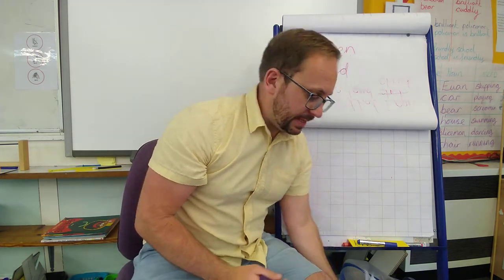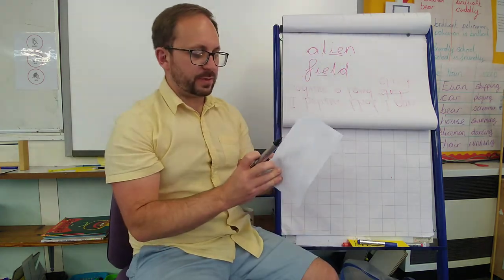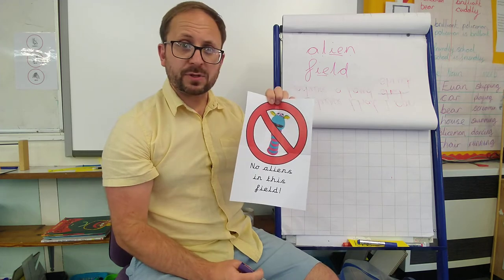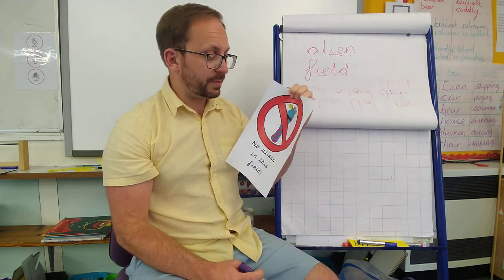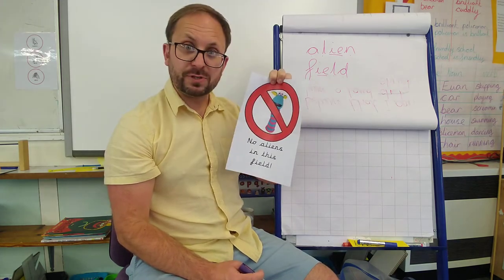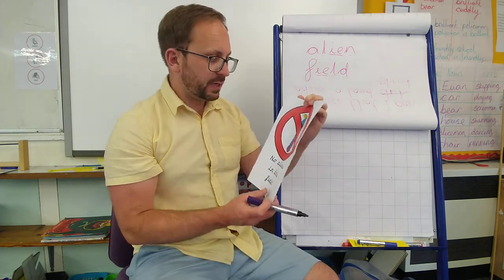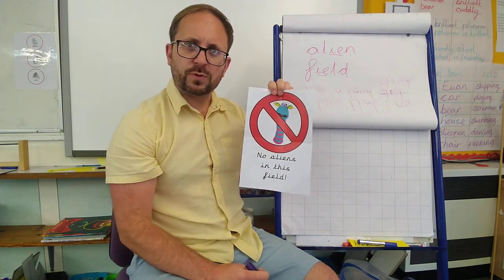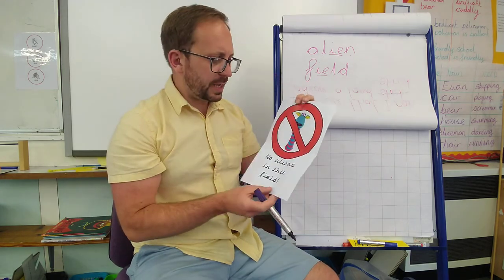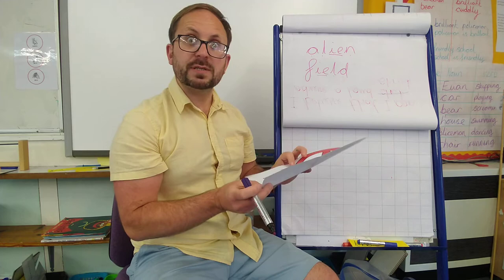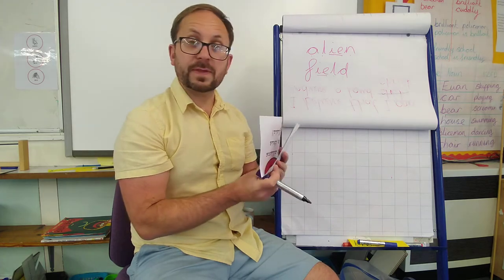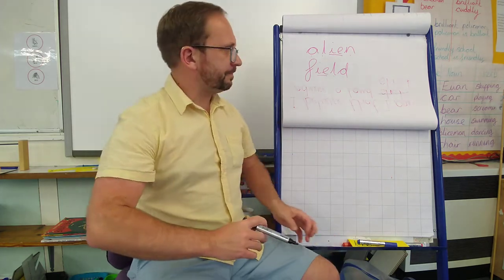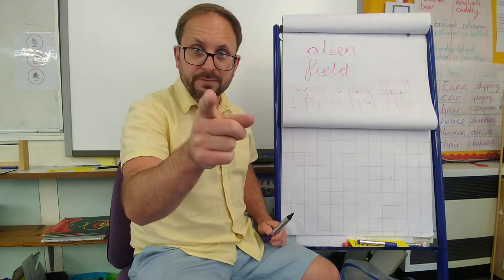Now, whoever's putting these up in fields, I don't think that's very kind. Aliens should be allowed to go in the field. Aliens are just the same as us and they should be treated the same as us. Do not stop Zag and his friends going out for lovely walks in the field, as long as they are staying two metres apart. I think there is nothing wrong with that. So, whoever's doing it — stop that.